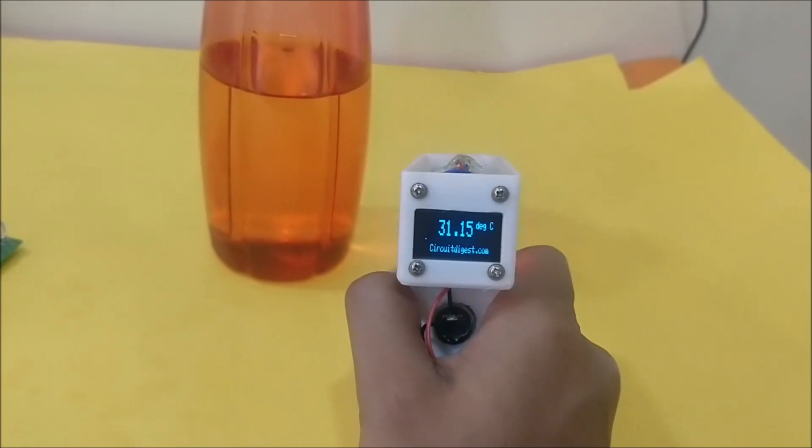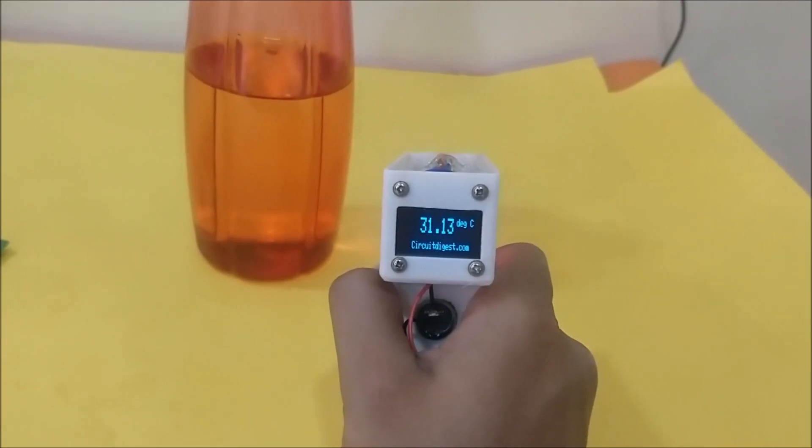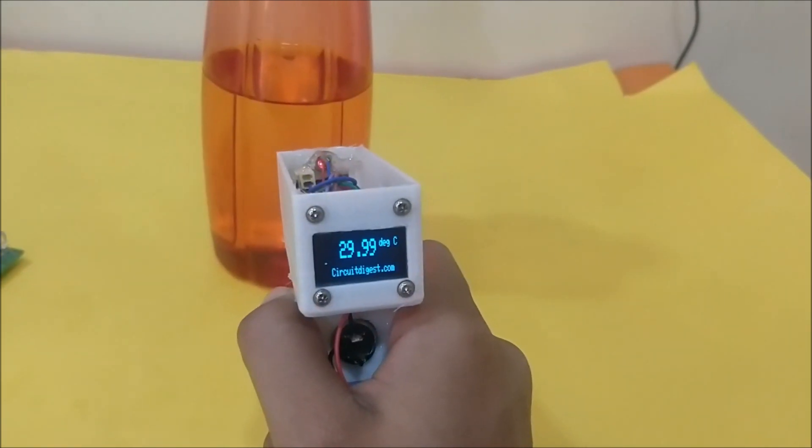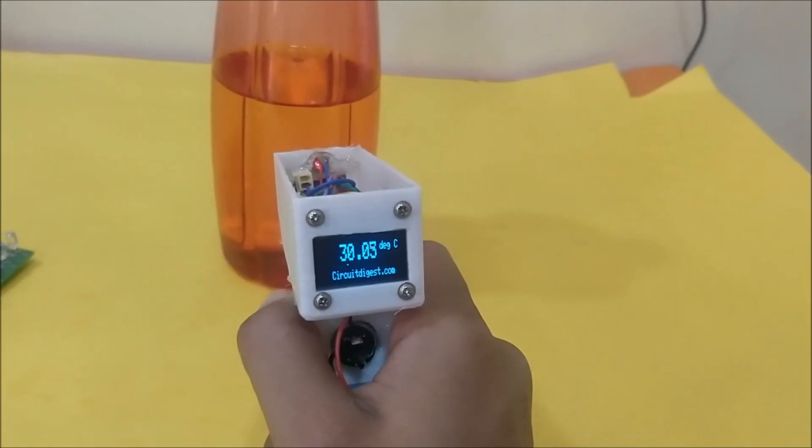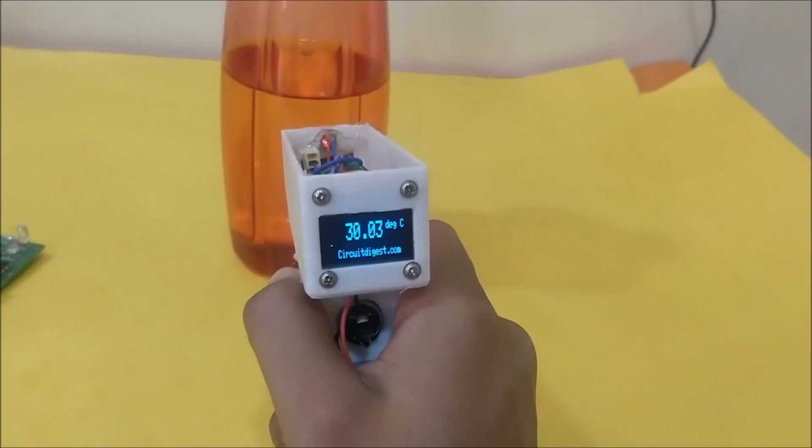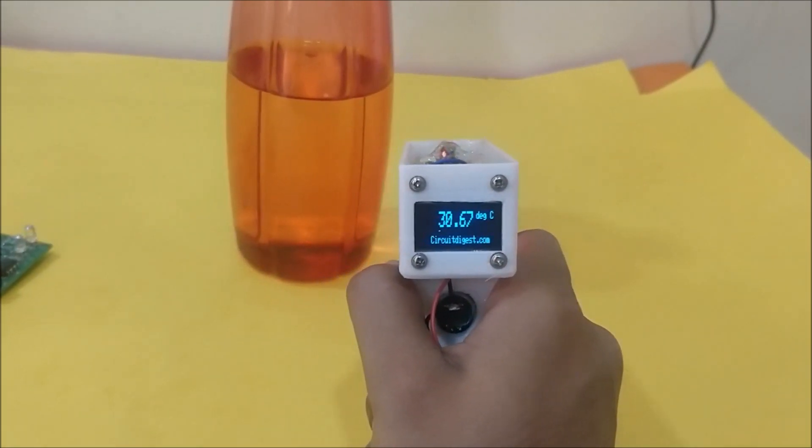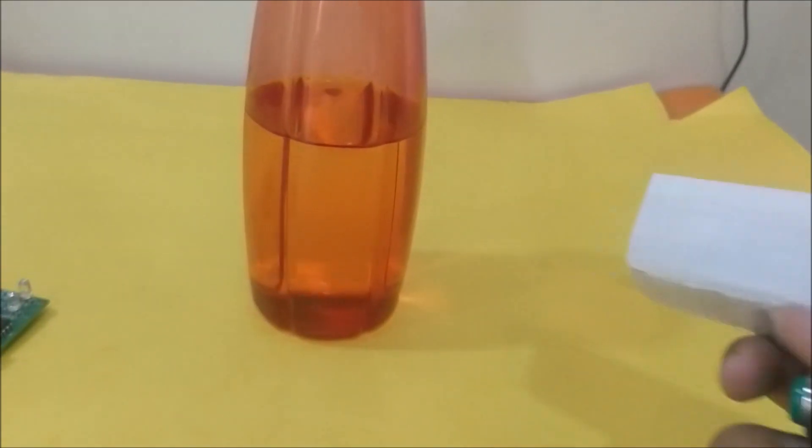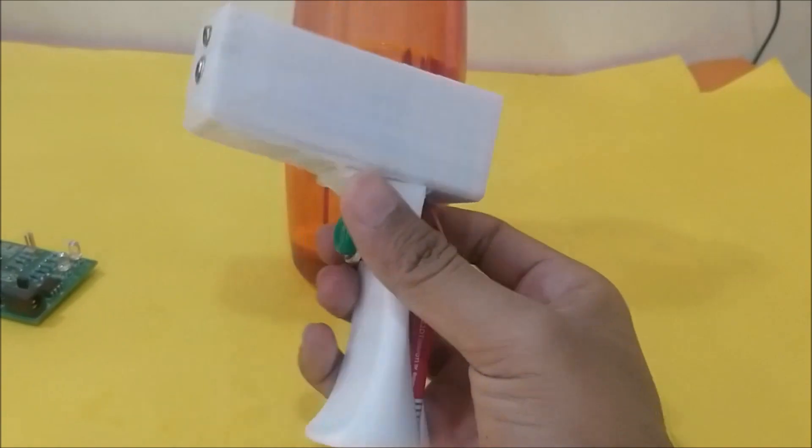If I move it away from the bottle, you can see that the temperature is 31.1. As I bring it towards a colder object, you can see the temperature going down to 29 or 30, and as I move away you can see the temperature increasing to 31. Let's try to test this gun on some other object.